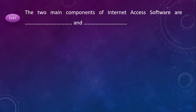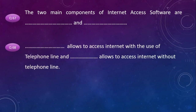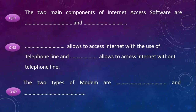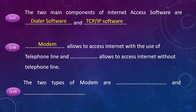The two main components of internet access software are dialer software and TCP/IP software. Modem allows access to the internet using a telephone line, and Wi-Fi allows access to the internet without a telephone line. The two types of modem are internal modem and external modem.